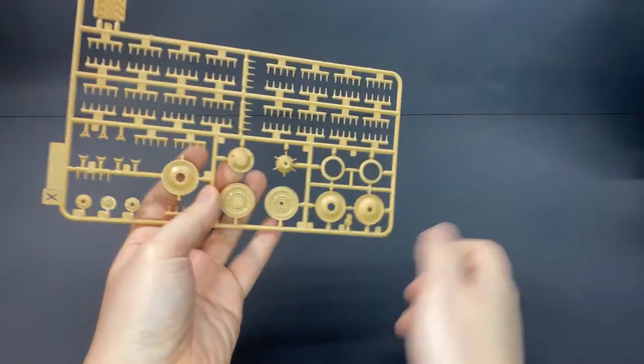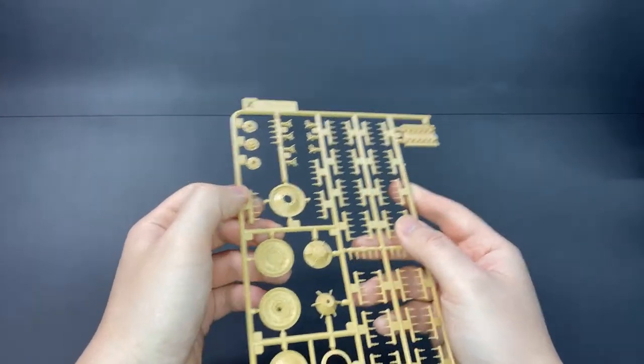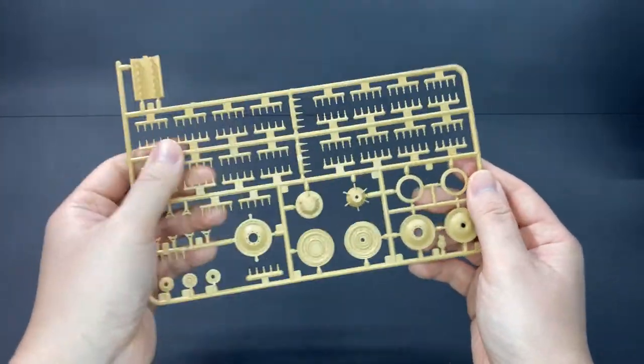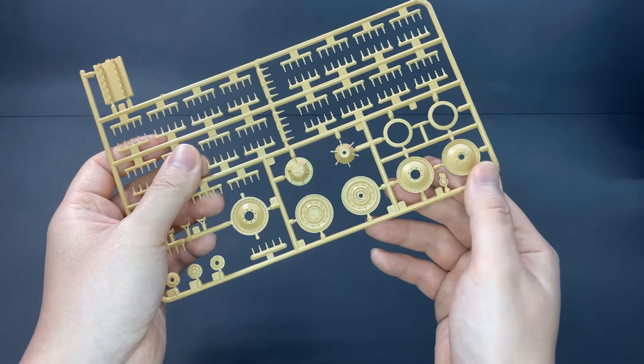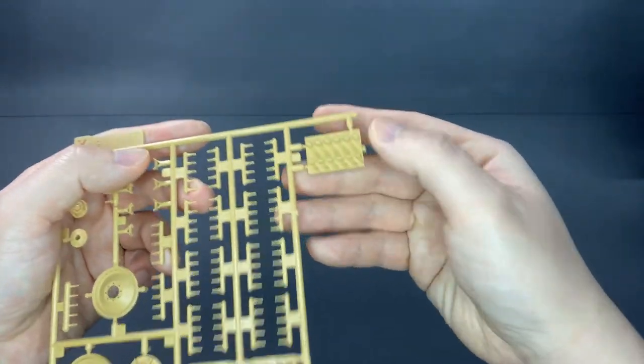Next up, sprue X. There are actually two of these sprues in the box. These are mainly track parts, like the idler wheel, road wheels, and this looks like the guide for assembling the tracks.